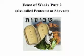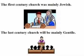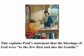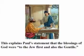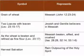Feast of Weeks, part two. The first century church was mainly Jewish; the last century church will be mainly Gentile. This explains Paul's statement that the blessings of God were to the Jew first and also to the Gentiles.